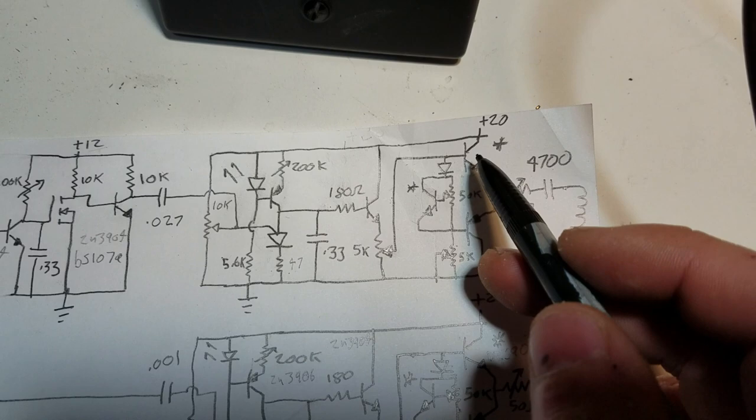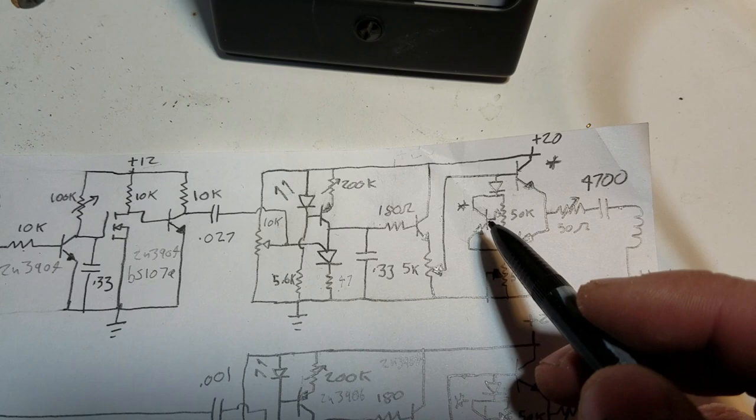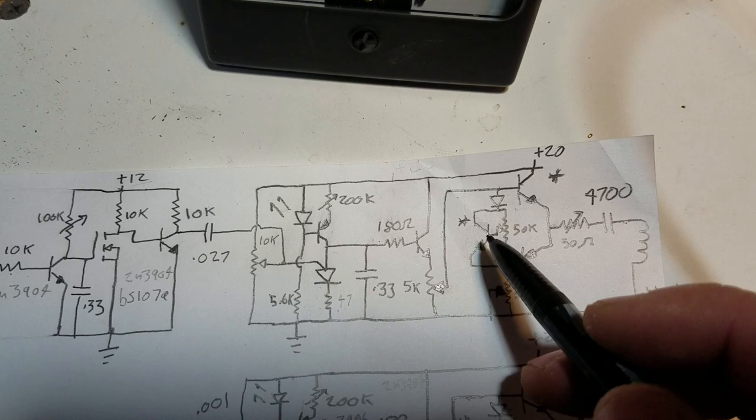What I find is that the hotter the transistors get, the higher their gain. That will cause the voltage drop across this transistor to drop. It will lower the current going through here, so it sort of self-regulates.